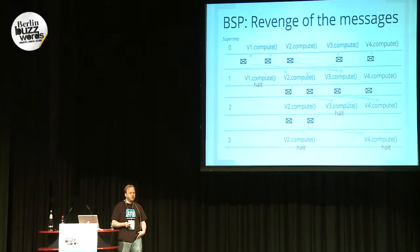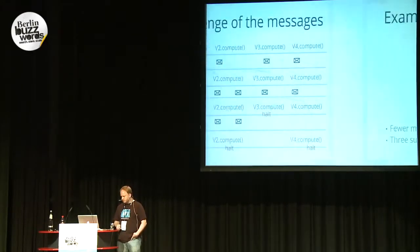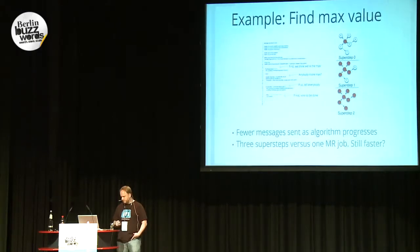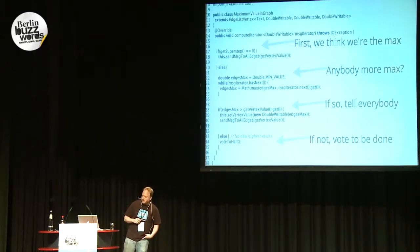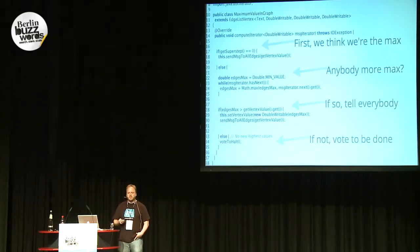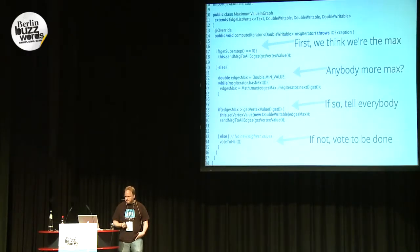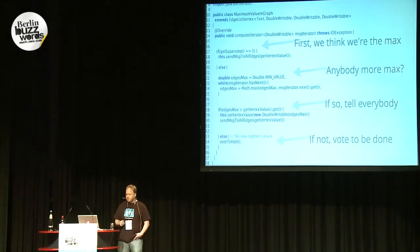This is the overall structure of a Giraph program: a bunch of vertices computing something, sending messages to each other, until they all get bored and quit. The first example is finding the max value in a graph. This is the actual code — you can see we have public class MaximumValueInGraph, we're extending EdgeListVertex. That vertex maintains its edges in a list allowing fast additions and changes. You can also use a hash map for better lookup time. We're parameterized over the vertex value type, message type, and edge value type — all doubles in this case.